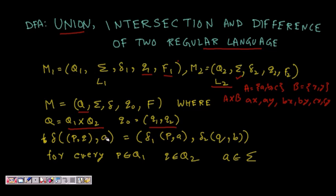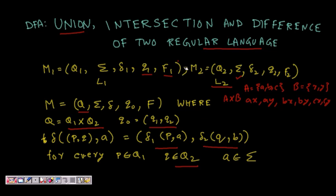So Q = Q1 cross Q2. The start state q_naught will be the tuple (q1, q2), the start states of both. The delta function is defined as: if you are in state (p, q) — where p belongs to Q1 and q belongs to Q2 — and get input symbol a from the alphabet, then the next state is (delta1(p, a), delta2(q, a)).